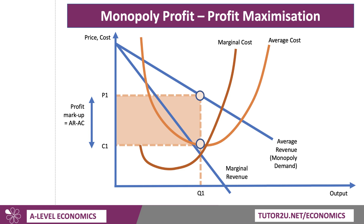The gap between price and cost is pretty high. In fact, it looks as if they're making like a 50% markup on cost, which we want to associate with monopoly, of course, because in a monopoly it may well be the case that they have few close substitutes for the product. There's a lack of viable competition, as we mentioned, which allows the monopoly to make supernormal profits.